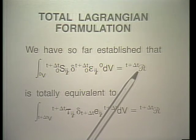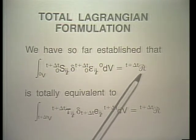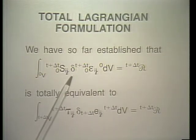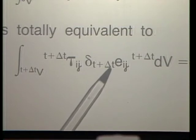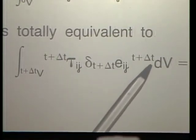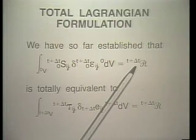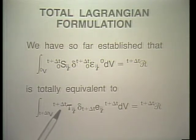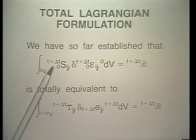On the right-hand side, all the body forces, surface forces, et cetera, would enter. We discussed in a previous lecture how the right-hand side is calculated. We also discussed that this equation is equivalent to one involving the Cauchy stress tensor operating on the virtual strain tensor — an infinitesimally small strain tensor — integrated over the volume at time t plus delta t. We need to introduce a new stress measure and a new strain measure, which brings us to the total Lagrangian formulation equation.